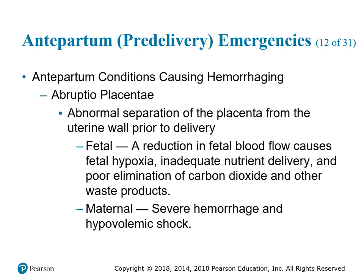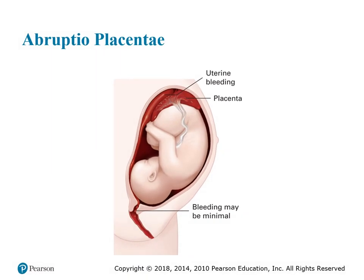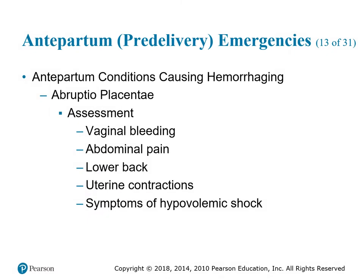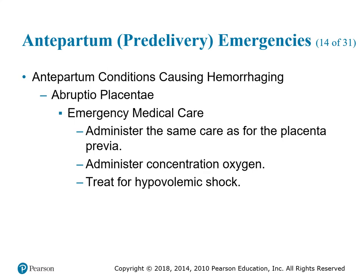Abrupto placenta is the abnormal separation of the placenta from the uterine wall prior to delivery. This causes reduction of fetal blood flow, fetal hypoxia, inadequate nutrient delivery, and poor elimination of carbon dioxide. On the maternal side, you have severe hemorrhage and hypovolemic shock. Often you'll see dark bleeding as opposed to bright red bleeding. Assessment: look for vaginal bleeding, abdominal pain, lower back pain, uterine contractions, and symptoms of hypovolemic shock. Emergency care: administer high concentrations of oxygen and treat for hypovolemic shock.